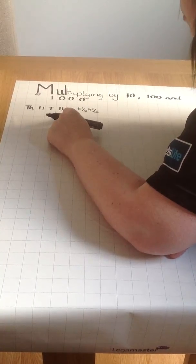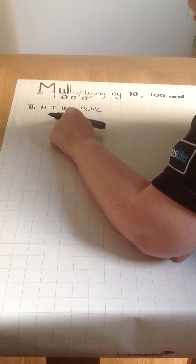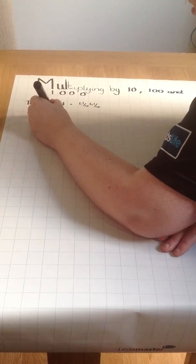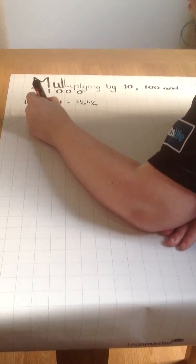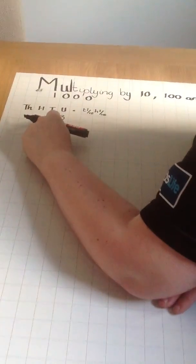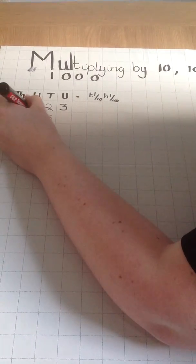Firstly, I'm going to multiply the three units by 10. 3 times 10 is 30. 20 times 10 is 200.